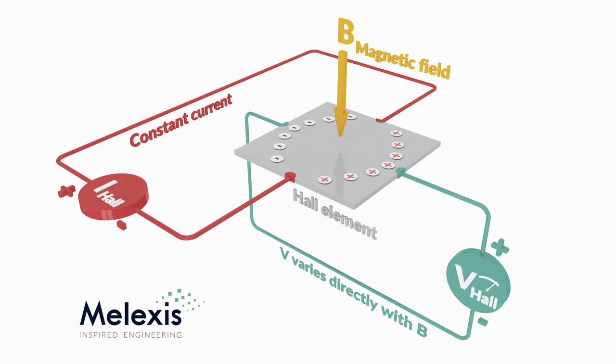The Hall effect occurs when an electrical current is sent through a conductive plate. Normally, the electrons move in a reasonably uniform pattern through the plate, but when that plate's exposed to a magnetic field, one side develops a stronger negative charge by collecting the electrons.